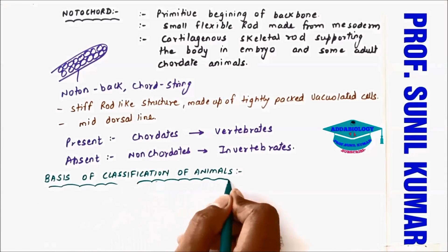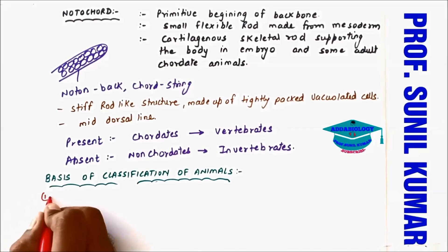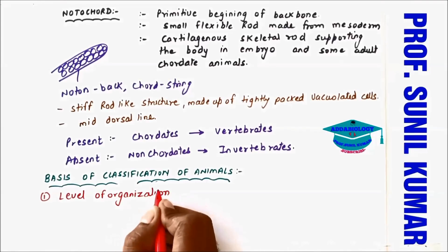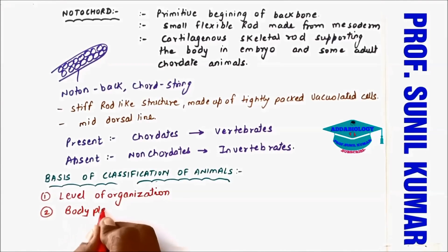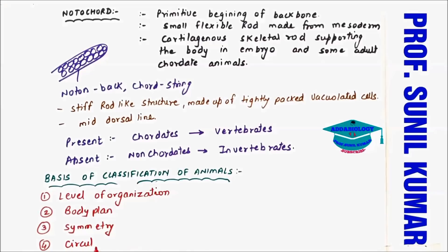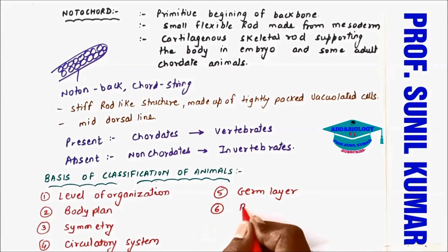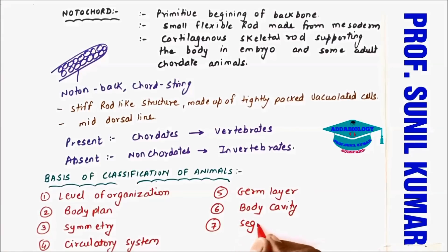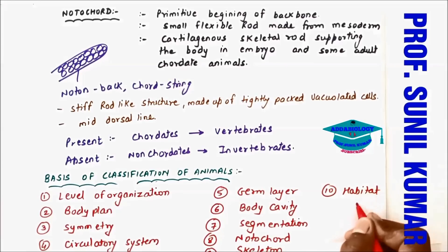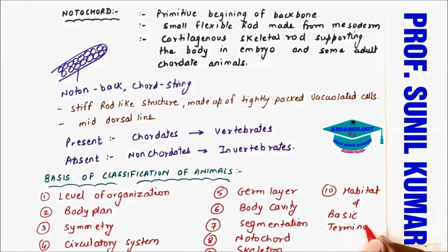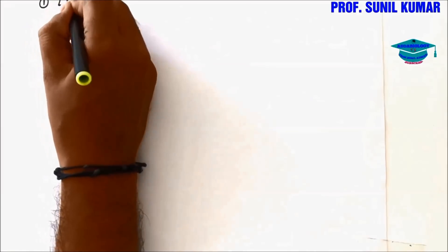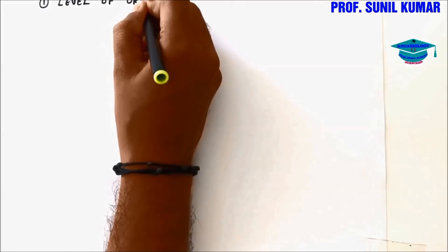Let's understand the basis of classification. Once you understand the ideas of animal classification, the various phyla will be easy to understand. The criteria are: first, level of organization; second, body plan; third, symmetry; fourth, circulatory system; fifth, germ layer; sixth, body cavity; seventh, segmentation; eighth, notochord; ninth, skeleton; and tenth, habitat and basic terminology.